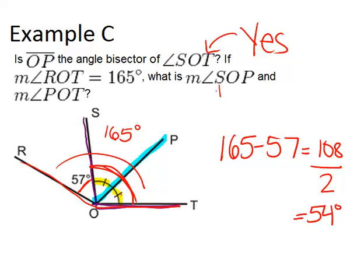So SOP is going to have a measure of 54 degrees. And POT is also going to be 54 degrees. And just to double check, you could check your answer by adding up 57, 54, and 54 and checking if that equaled to 165.